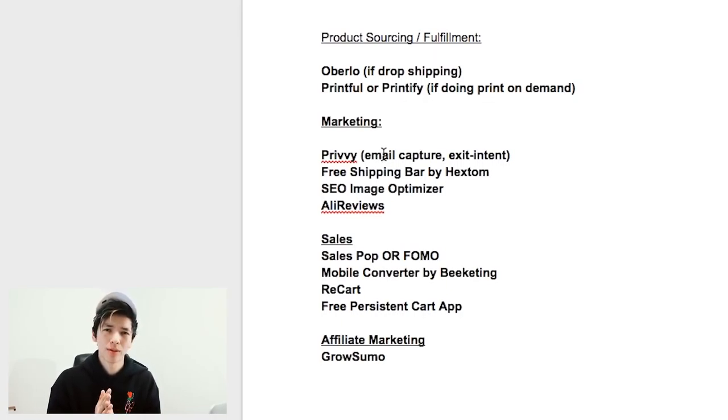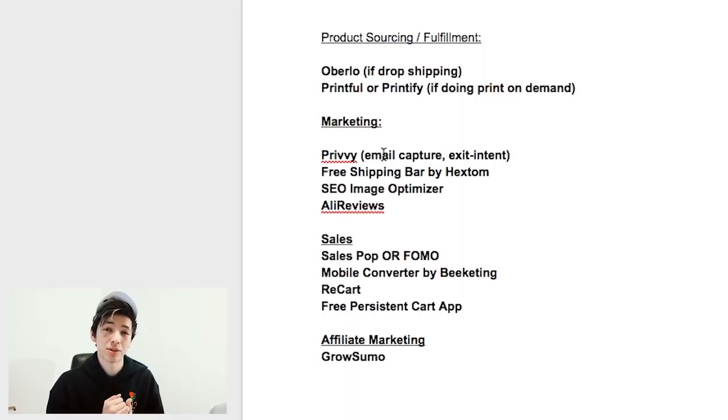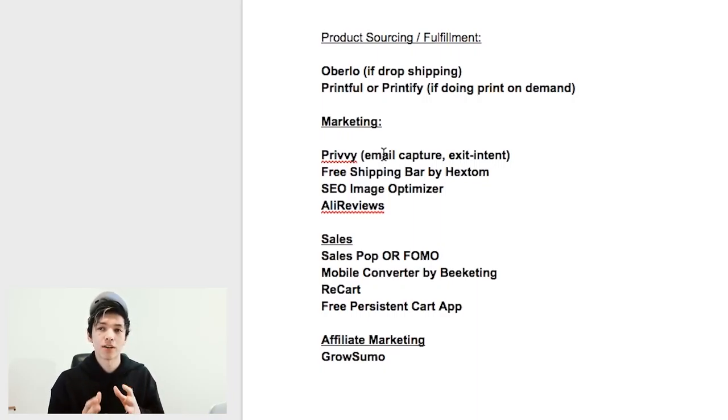Next is the SEO Image Optimizer. I know a lot of you probably won't be getting a lot of organic traffic right off the bat, but having your images SEO-optimized for search engines will eventually lead to a trickle of organic traffic you don't have to pay for — and that's the best kind of traffic, traffic that comes to you without you having to go get it. Another app for marketing is AliReviews. It basically lets you import AliExpress reviews into products you're selling to build customer trust, so they see that other people have bought the product.